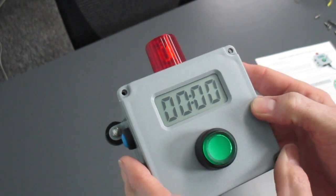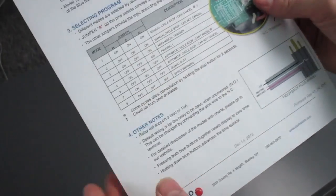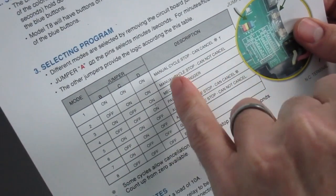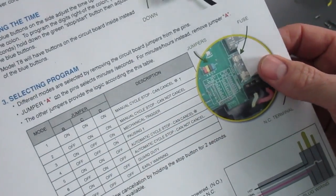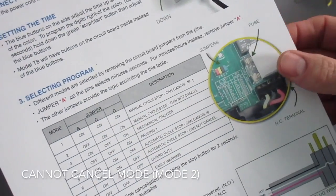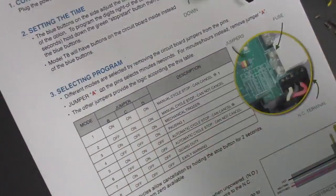There's another mode I'd like to show you. We've looked at mode one which is a manual stop and you can cancel it. If you don't want the operator to cancel it then you just take off jumper B there and then they cannot cancel it.